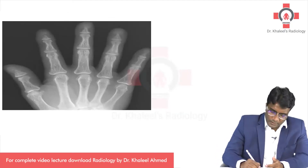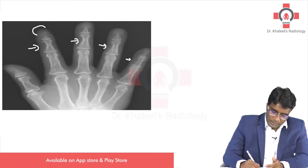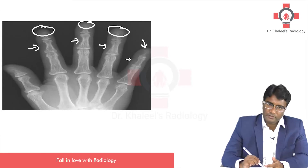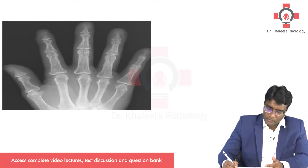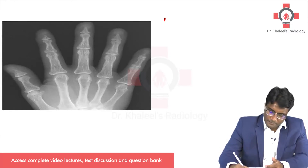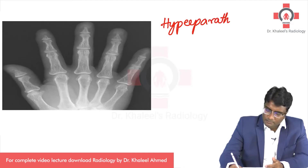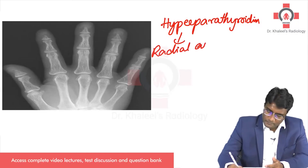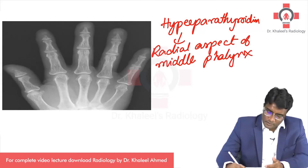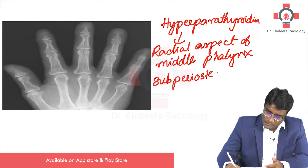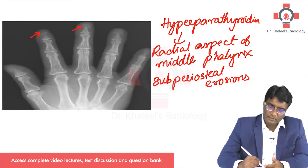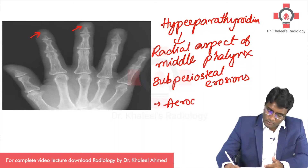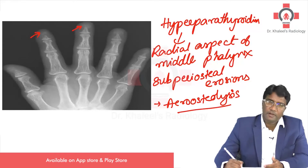When you see these erosions involving the radial end of the middle phalanx, you can also see there is tufting and erosions of the distal phalanx. All of this goes in favour of hyperparathyroidism. Hyperparathyroidism has these classic erosions on the radial aspect of the middle phalanx, and this is because of the subperiosteal erosions that occur in hyperparathyroidism. This destruction of the distal phalanx is called acroosteolysis, also a feature of hyperparathyroidism.